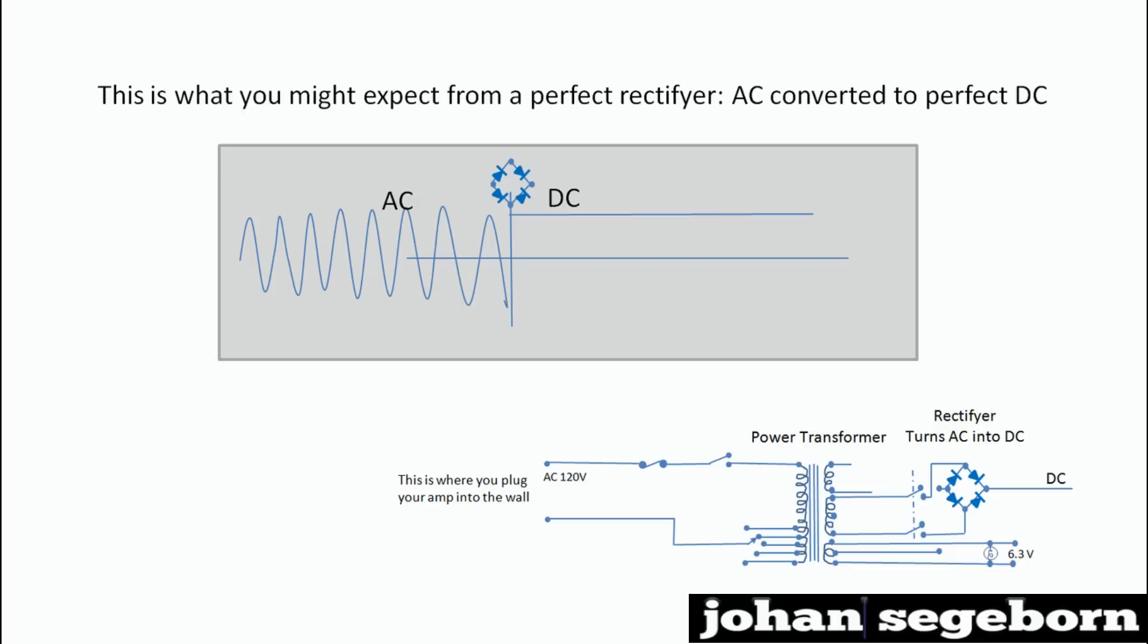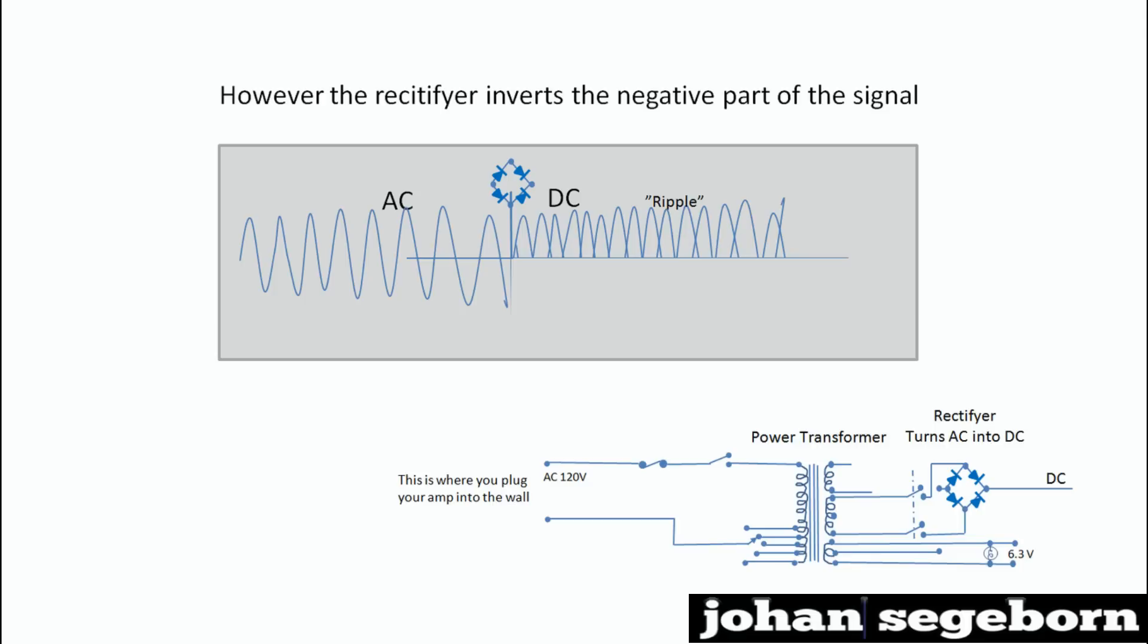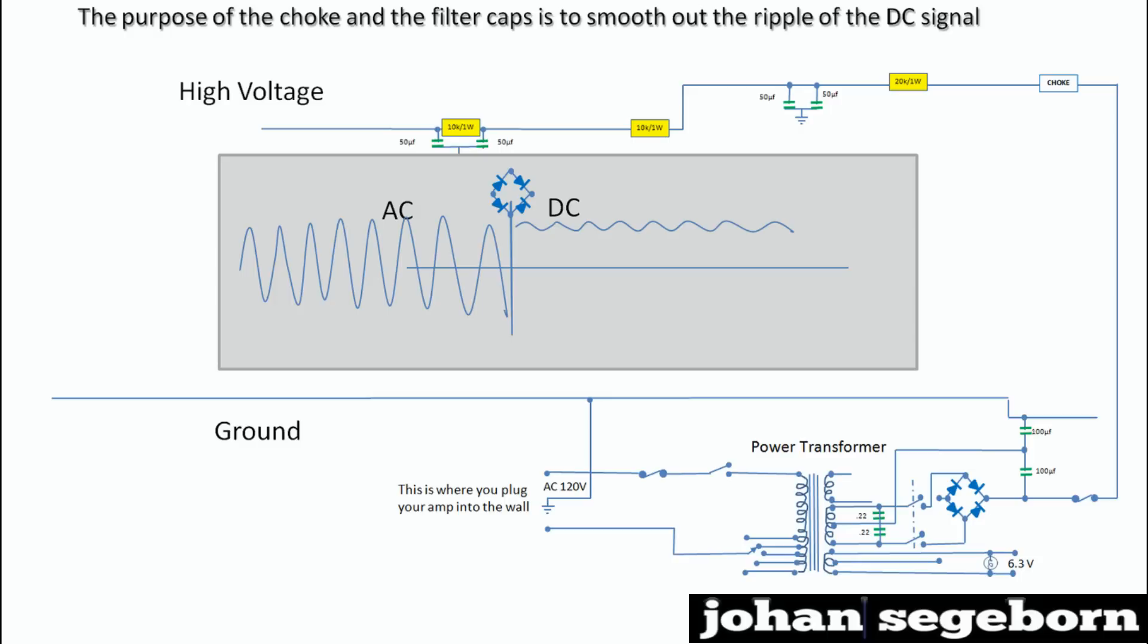From a rectifier, you might expect a perfect direct current. But that's not how it works. It rather inverts the negative part of the signal, creating this kind of waveform, ripple. And that has a negative effect on the sound. So therefore, in the high voltage portion of the overall circuit, we introduce a number of components. A choke and some filter caps to filter out and smooth out the ripple of the DC signal.